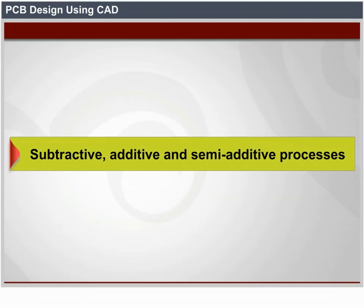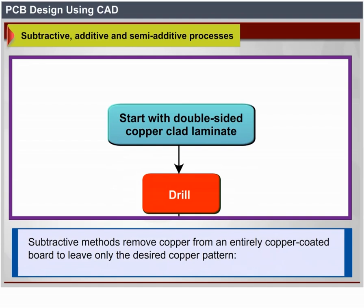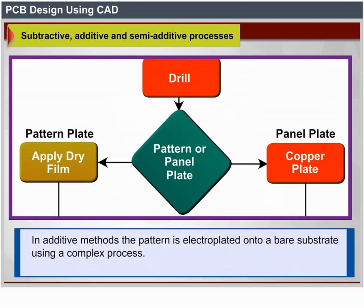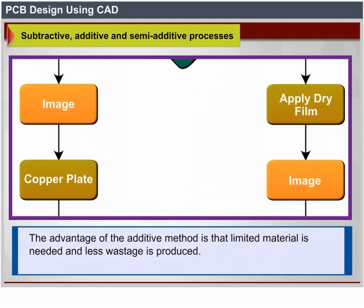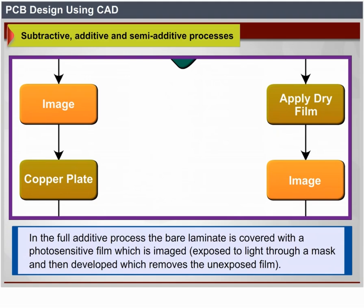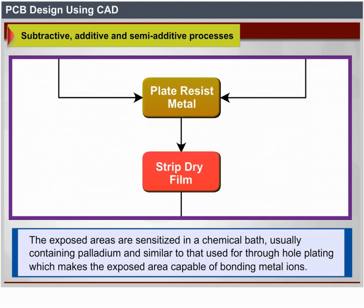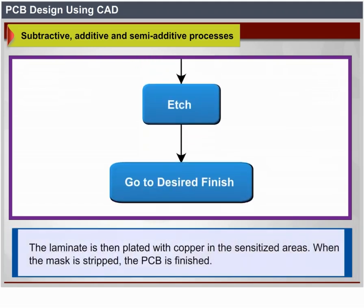Subtractive, additive, and semi-additive processes. Subtractive methods remove copper from an entirely copper-coated board to leave only the desired copper pattern. In additive methods, the pattern is electroplated onto a bare substrate. The advantage of the additive method is that less material is needed and less waste is produced. In the full additive process, the bare laminate is covered with a photosensitive film, imaged, exposed to light through a mask, then developed to remove unexposed film. The exposed areas are sensitized in a chemical bath (usually containing palladium) making them capable of bonding metal ions. The laminate is then plated with copper in the sensitized areas; when the mask is stripped, the PCB is finished.